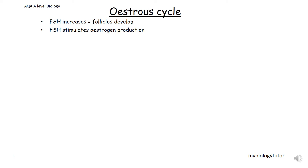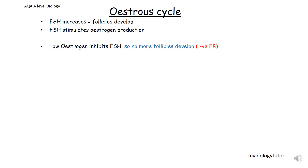So the oestrogen levels are low at this point, and this inhibits the FSH. This is really important because it makes sure that no more follicles develop, so only that one follicle which was triggered in the first place starts to develop.